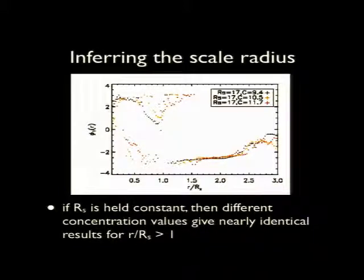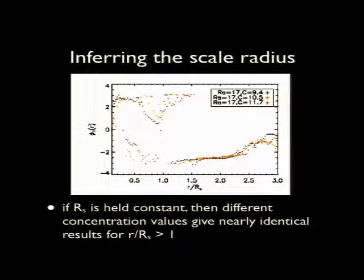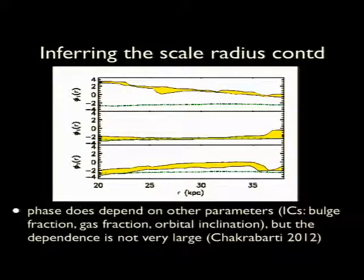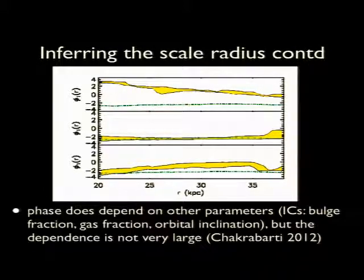We also checked that the inference of the scale radius is robust to varying the concentration parameter by varying R200 within the NFW model — there isn't much dependence in the outer regions, though there is some dependence in the inner regions since the disk size is set by the concentration parameter. We also verified the metric's robustness to initial conditions like bulge fraction and gas fraction, and to varying satellite mass and pericentric approach distance. While there is some dependence on these parameters, it isn't so large that you can't distinguish between a large, intermediate, and low scale radius. Interestingly, the 17 kiloparsec scale radius is what you expect from dissipationless simulations for virial masses of order 10 to the 12th solar masses.